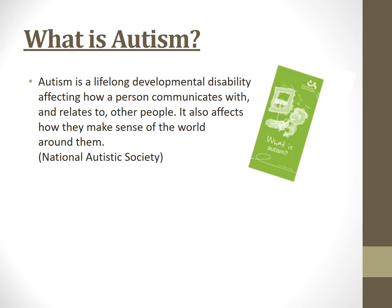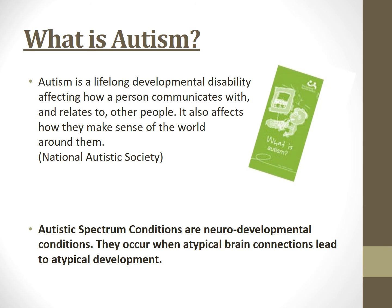So what is autism? The National Autistic Society describes it as a lifelong developmental disability affecting how a person communicates with and relates to other people. It also affects how they make sense of the world around them. I think that's probably accurate but also a little negative, so here's an alternative: autistic spectrum conditions are neurodevelopmental conditions. They occur when atypical brain connections lead to atypical development.